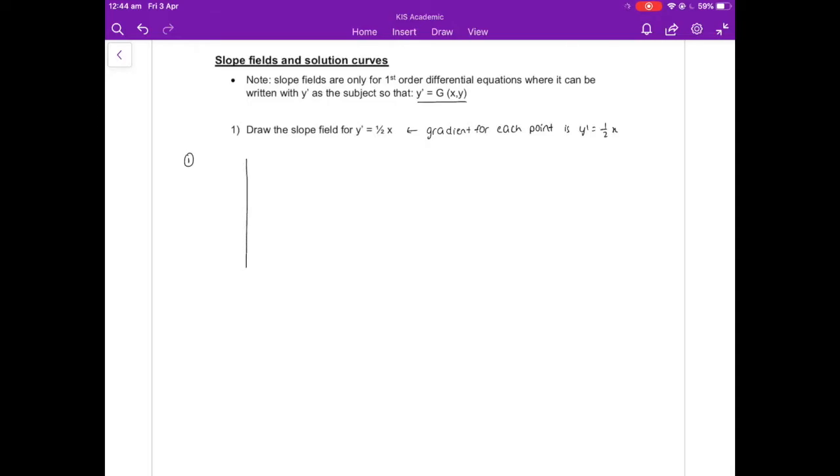Okay, so the gradient is half x, but we still need all the different points on all the different possibilities for the curves. So if I draw out a massive table and I make all the numbers going across, all of them will be the x values and all the ones going down will be the y values. So let me start at minus 3, minus 2, minus 1, 0, 1, 2, and 3. And same thing down.